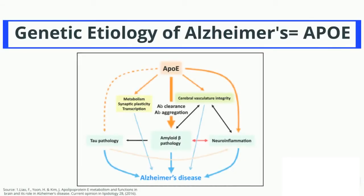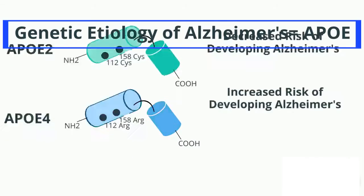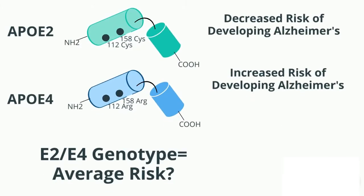The APOE gene is one of the main genetic determinants of Alzheimer's disease. It was found that the E4 allele increases and the E2 allele decreases risk of Alzheimer's. Using bioinformatics, we will investigate the epistatic interactions between the E2 and E4 alleles, which lead them to cancel out each other's risk of developing Alzheimer's disease when they are inherited together.